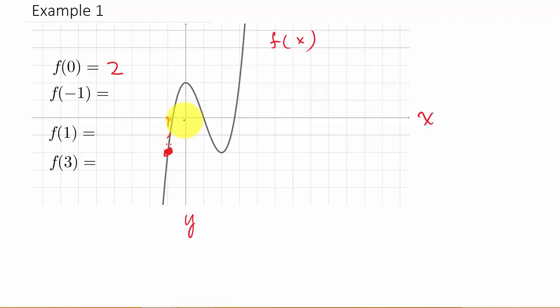So we go over to where x is negative 1 and we have to move down to get to the graph. We get to the graph here at negative 1, negative 2, when y is negative 2.